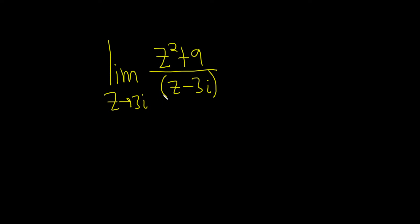So the strategy in this problem is to factor. We have the limit as z approaches 3i, and the numerator can actually be factored like this: z plus 3i times z minus 3i, and it's all over z minus 3i.